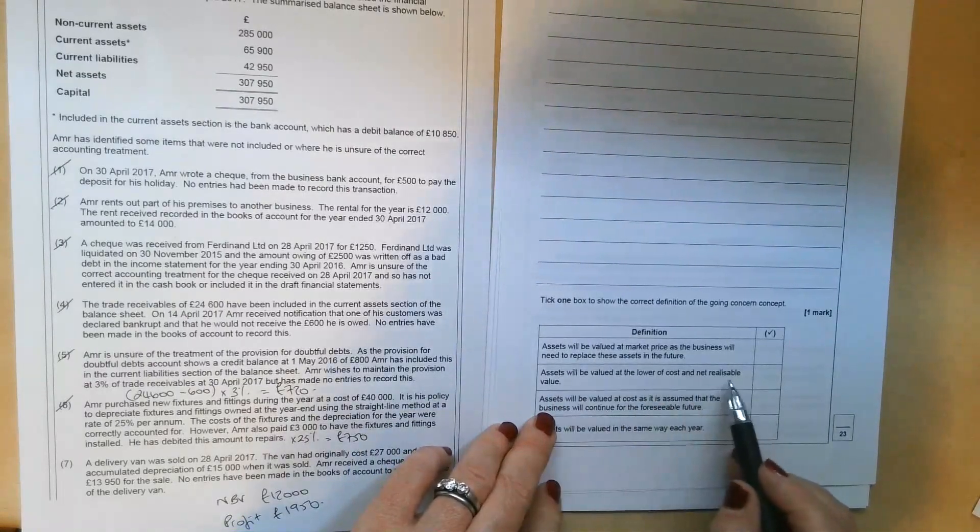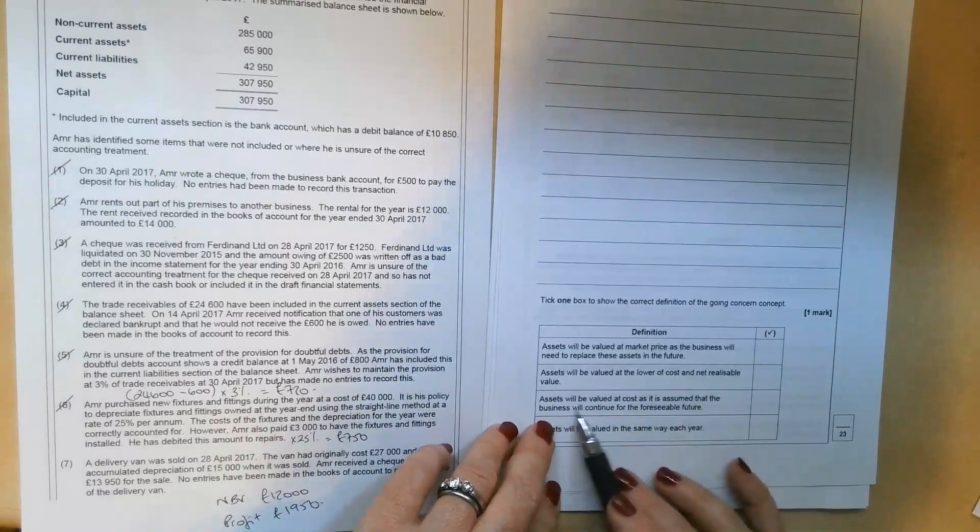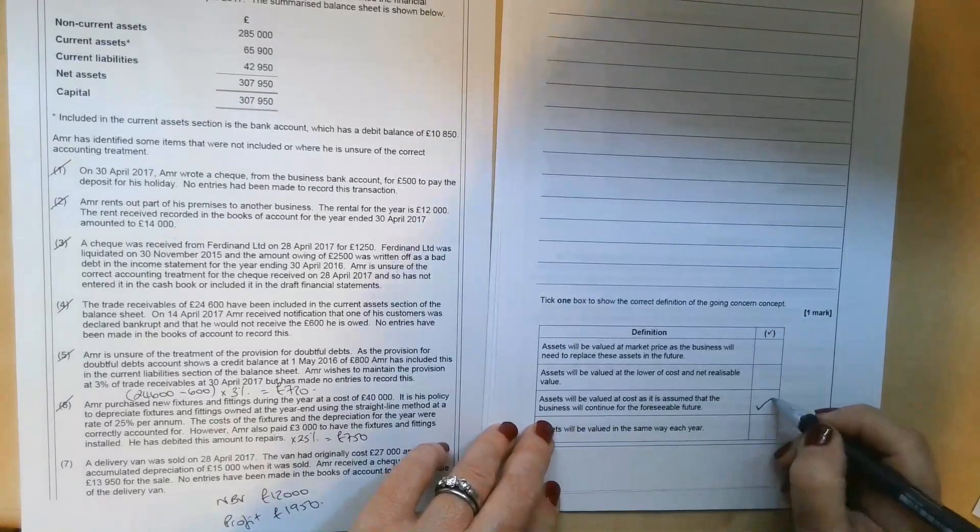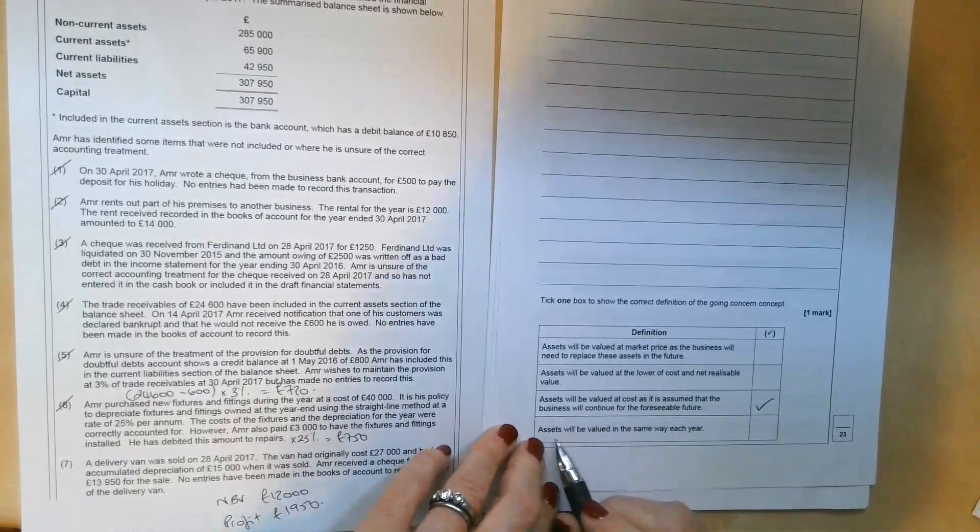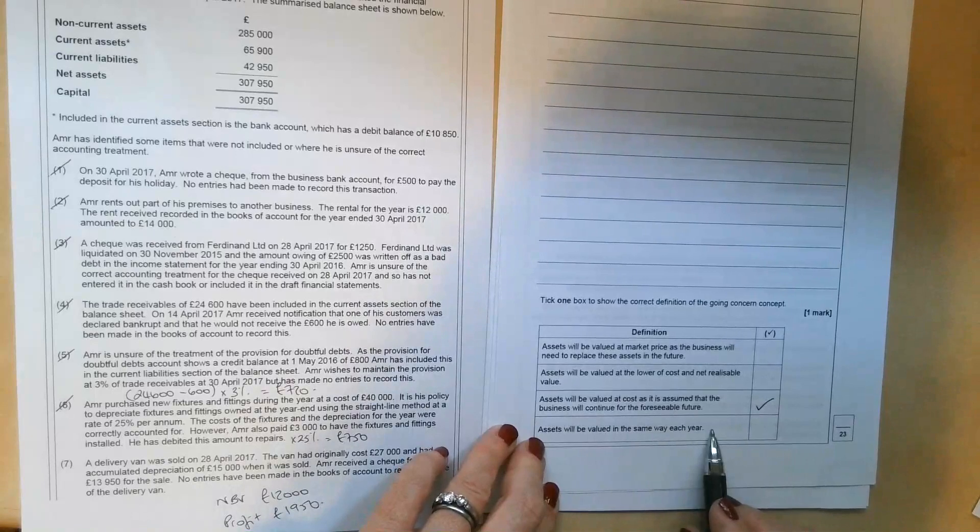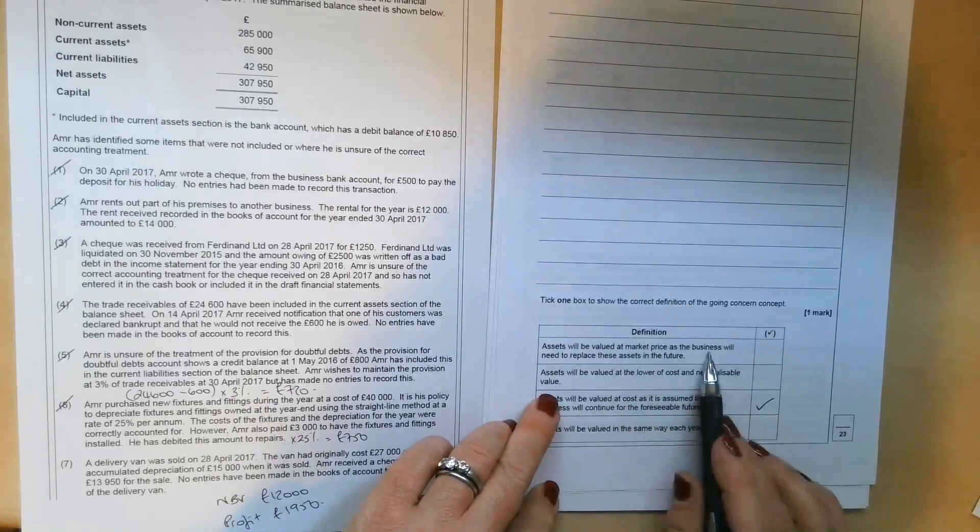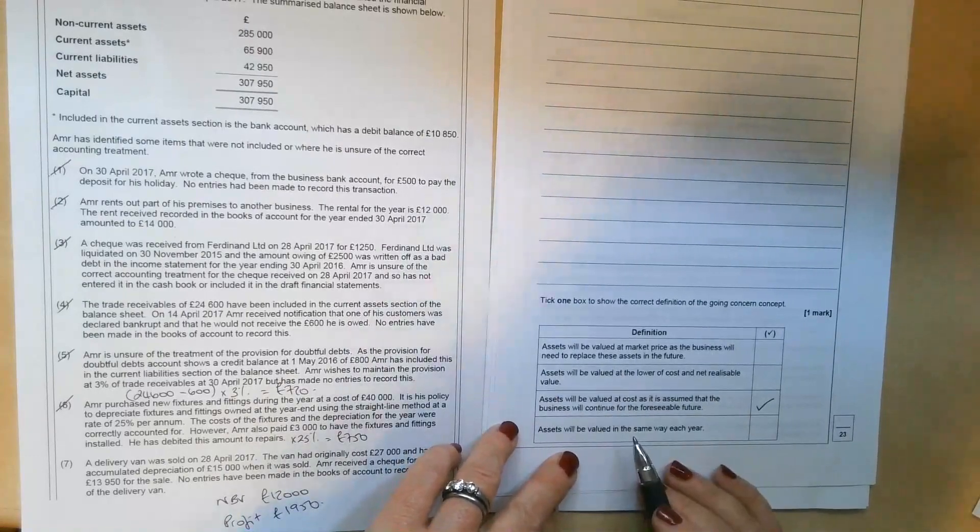Assets will be valued at the lower of cost and net realisable value. Assets will be valued at cost as it is assumed that the business will continue for the foreseeable future. My money's on that one, but let's just check with this one. Assets will be valued in the same way each year. So that one's consistency. That one is the prudence concept. That one is irrelevant. So yeah, definitely that third one there.